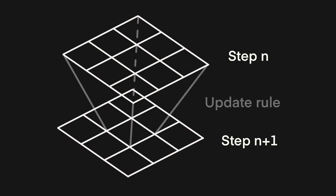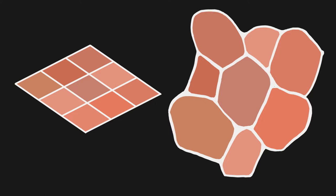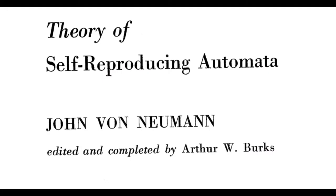A cellular automaton is a grid of cells, each of which has an internal state. The only requirement is that the next state of each cell depends only on its previous state and the state of its neighbors. This is analogous to what real cells do. Von Neumann's automaton was capable of self-replication but used 29 different states and a rather complicated dynamics.